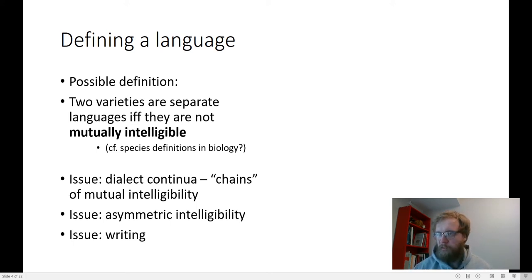Also, it's sometimes the case that speakers of one language will be able to understand speakers of the other language, but it won't work the other way around. The intelligibility isn't mutual, it's actually asymmetric. Another issue is the writing system, because writing is such an important part of people's identities. It can also get tied up in people's definition of language. So if two groups of people speak what we might consider to be the same language but they have different writing systems, they might consider themselves to be speakers of different languages.